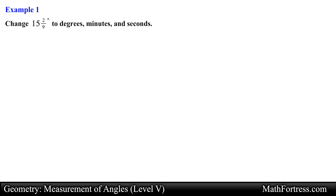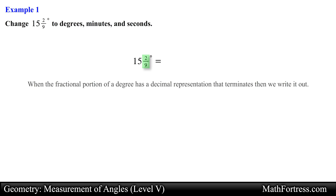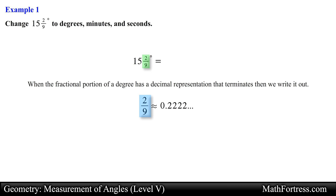Change 15 and 2/9 degrees to degrees, minutes, and seconds. In this problem we are asked to change the degree measurement that contains a fractional part of a degree into the degrees-minutes-seconds notation. Notice that instead of a decimal we have a fraction. Usually when the fractional portion of a degree has a decimal representation that terminates we write it out, but in this case the decimal representation of 2/9 repeats forever, so we leave it as a fraction.